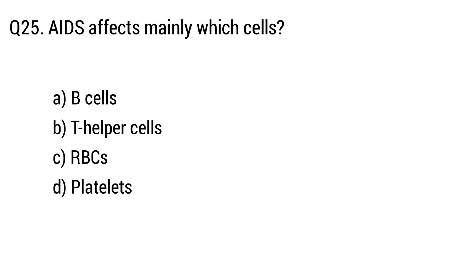Question 24: Prions are? The right answer is option C, proteins. Question 25: HIV mainly affects which cells? The right answer is option B, T-helper cells.